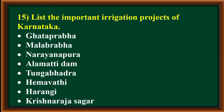List the important irrigation projects of Karnataka. They are: Ghataprabha, Malaprabha, Narayanpura, Almatti Dam, Tungabhadra, Hemavati, Harangi, and Krishna Rajasagara.